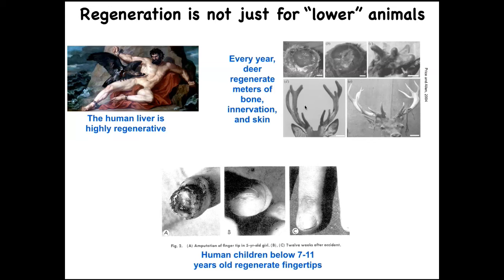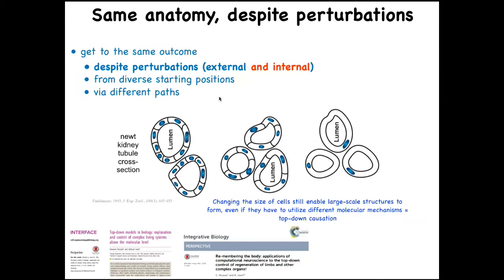Even human children can regenerate their fingertips. The ability to get to the correct target morphology when deviated from it by injury is not the end of the story. Here's one of my favorite examples: a cross-section through a kidney tubule in a newt, usually about eight to ten cells that work together to give this anatomical structure. The ability to get to where you're going in anatomical space is not just about external injury.